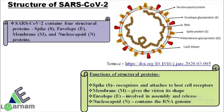Here is the structure of SARS-CoV-2. It contains four structural proteins: spike protein, envelope protein, membrane protein, and nucleocapsid protein. The nucleocapsid protein contains the RNA genome — the genetic material of the virus. The envelope glycoprotein is involved in assembly and release of virus particles from the host cell. The spike protein is responsible for recognition and attachment to the host cell receptor, which is the ACE2 receptor. The membrane glycoprotein provides shape to the virus particle.